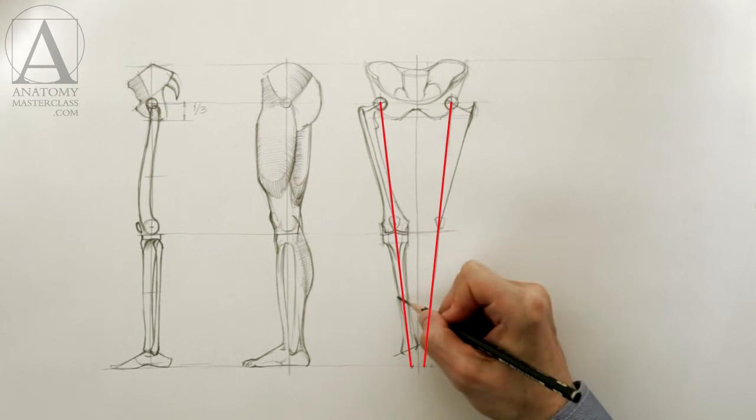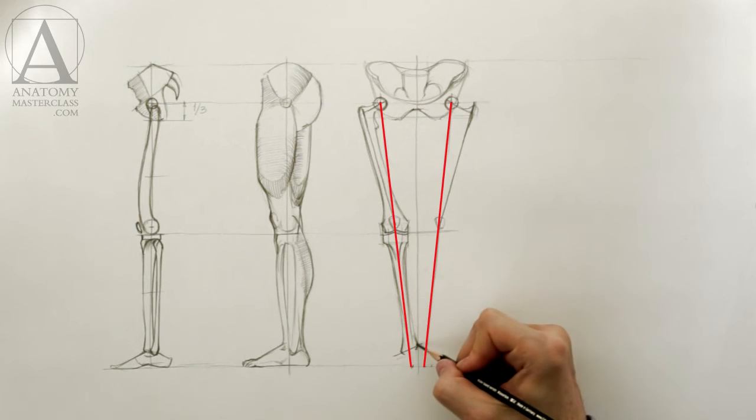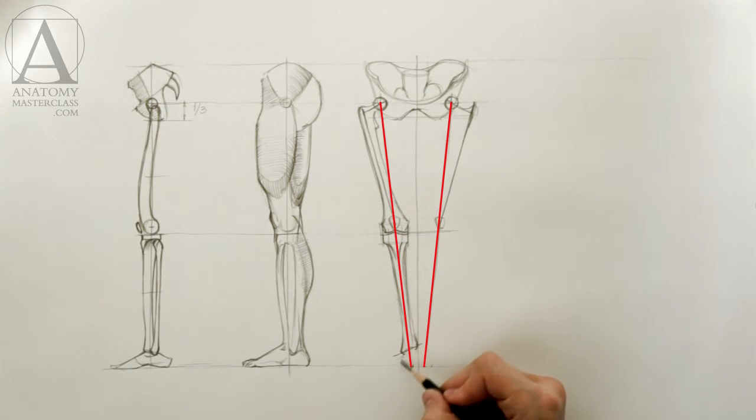The axis of each lower limb is indicated here as straight lines, from the hip joints to the bottom of the feet. As you can see, these axes are not vertical but tilt downward and converge at the bottom.